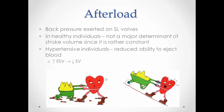Now afterload is the back pressure exerted by the semilunar valves — think of it as the pressure in the arteries. So what do the ventricles have to do to overcome that pressure? That would be the afterload. In healthy individuals, this isn't a major determinant because stroke volume is pretty consistent. But in hypertensive individuals, you get a reduced ability to eject the blood because the blood pressure is high, which means the ventricles have to push that much harder to overcome that pressure. If they can't push harder, they're going to not eject as much blood, and therefore the end systolic volume goes up, which means stroke volume goes down. It would be like climbing a hill — the ventricles have to climb a hill to push the blood out and overcome that pressure in the arteries.